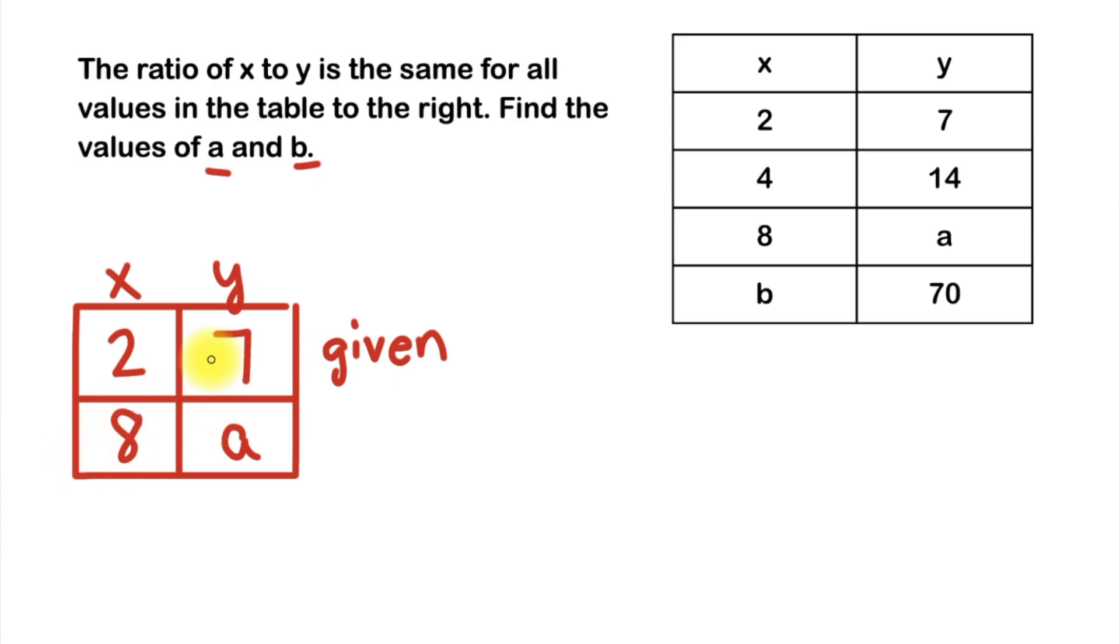Now that every box in our table is filled, we can get to work. The best way to find the missing value if possible is to look for the column where you have both values. In the x column I have 2 and 8, so the question is how can we go from 2 and use multiplication or division to turn it into 8? Well that would be times 4, because 2 times 4 will give you 8.